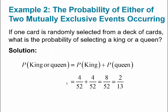Let's try this: if one card is randomly selected from a deck of cards, what is the probability of selecting a king or a queen? That's equal to the probability of a king plus the probability of a queen, because they're mutually exclusive — you can't draw both at the same time. The probability of a king is 4/52 and the probability of a queen is 4/52, so this is 8/52, which simplifies to 2 out of 13.